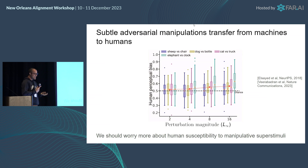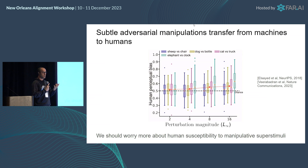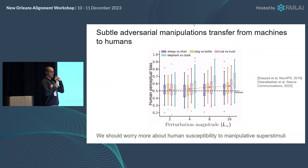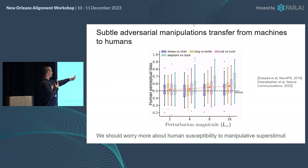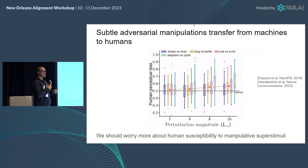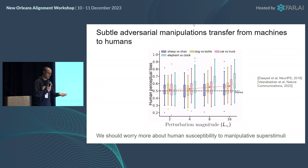Let me show you our results. Subtle adversarial manipulations that work on an ensemble of computer vision algorithms, after additional geometric augmentation, transfer to humans. In this plot, the x-axis is the perturbation magnitude of the adversarial example — the effect gets stronger the larger the perturbation you allow. The image you saw was perturbation magnitude two. The dashed line is chance performance, and the y-axis is how much we are able to bias human perception. Even at epsilon equals two, it's a two to three percent bias in human perception.